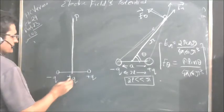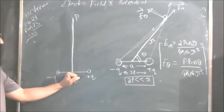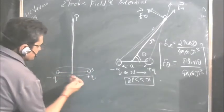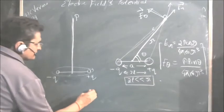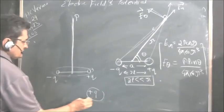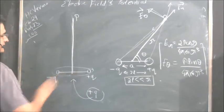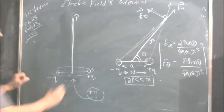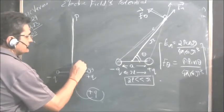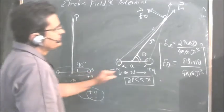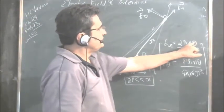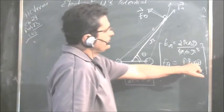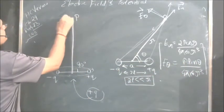For the time being, imagine there is no charge here, so you have a dipole. Don't place this charge here, it's creating confusion. Just keep it in memory separately; we will place it at a later stage. This is the dipole. Now this angle theta is 90 degrees. Cos 90 is 0, so E_r will be 0.